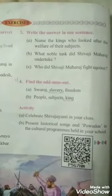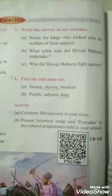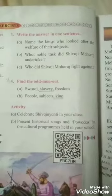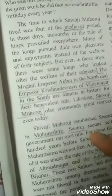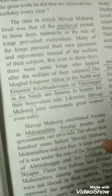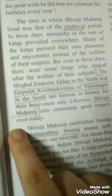Question No. 3: Write the answer in one sentence. Name the king who looked after the welfare of their subjects. Look at here — the Mughal Emperor Akbar in the North, and Emperor Krishna Devraya of Vijayanagar in the South looked after the welfare of their subjects.